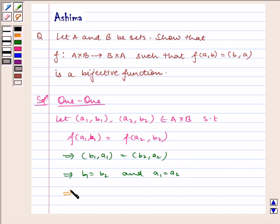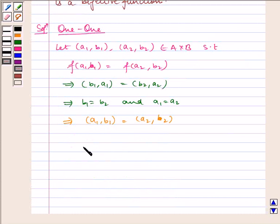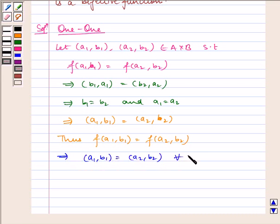This implies (a₁,b₁) = (a₂,b₂). Therefore, for all (a₁,b₁), (a₂,b₂) ∈ A×B, if f(a₁,b₁) = f(a₂,b₂) then (a₁,b₁) = (a₂,b₂).